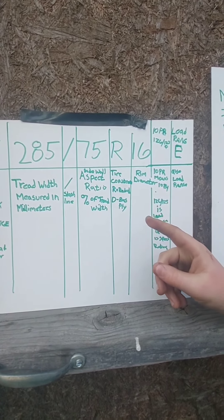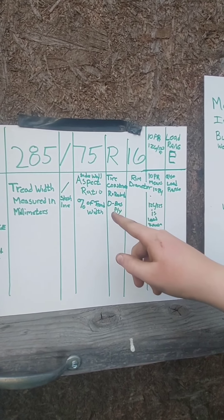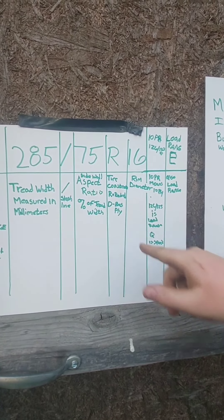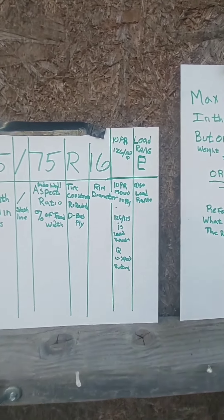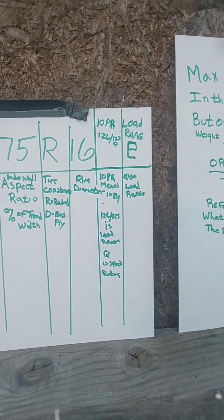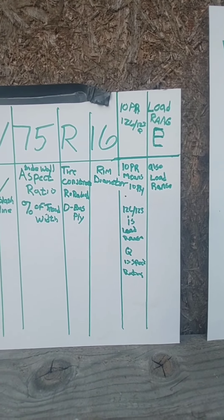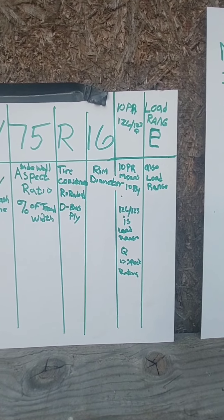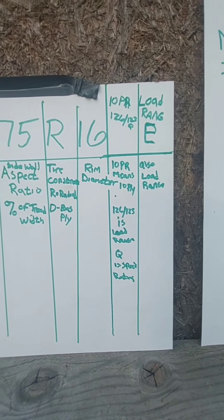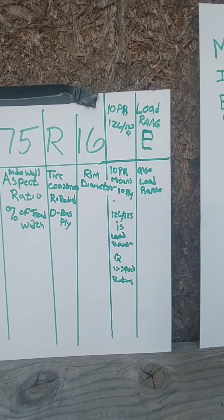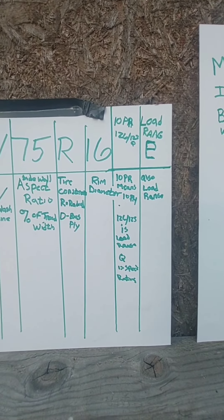Next up is your tire construction. Most people think the R means rim, but in this case it means radial — or you could have D, which is bias ply. The 16 is actually the rim size. You could have 14, 15, 16, or 16.5. Just make sure you mount your tire on a proper rim size. You can't put a 16-inch tire on a 16.5-inch rim or vice versa — it just won't work, it'll be unsafe and come right off the rim.